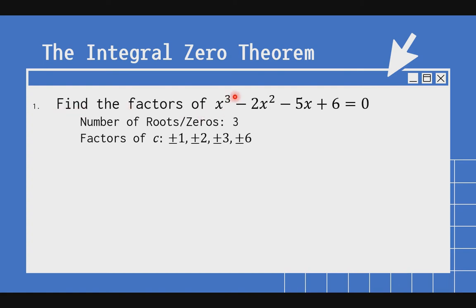For example number one: find the factors of x cubed minus 2x squared minus 5x plus 6 equals zero. Dahil 3 ang pinakamataas na exponent, ang number of roots or zeros is 3. Ang ating constant term c dito ay 6. Ang gagawin natin, hahanapin natin yung factors ng 6: positive or negative 1, positive or negative 2, positive or negative 3, and positive or negative 6 — kasi pwede mong i-divide ang 6 sa mga values ng 1, 2, 3, at 6.